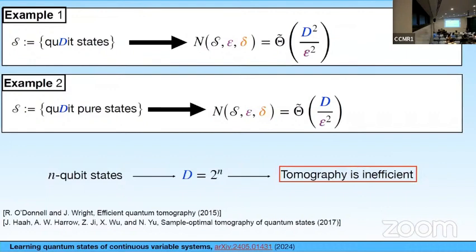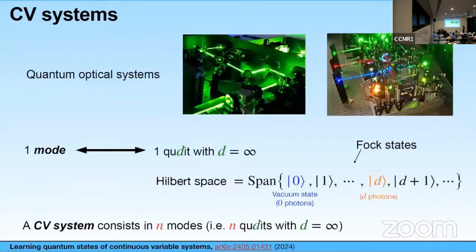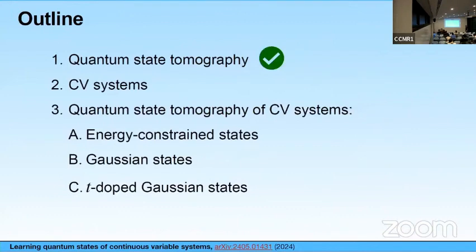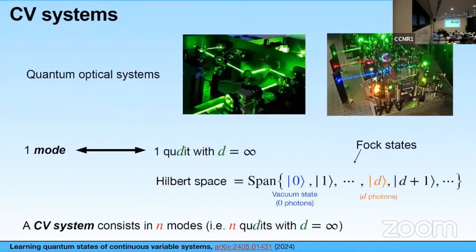Now let's talk about continuous variable systems — we are basically talking about quantum optical systems. Here, the role of one qubit is played by the so-called one mode. One mode is basically one qudit with d equal to infinity — an infinite dimensional qudit. The Hilbert space of one mode is the span of the Fock states: ket-zero is the vacuum state, ket-one is the single photon state, and ket-d is the state with d photons. A continuous variable system is a system that consists of n modes — it is n qubits with d equal to infinity.